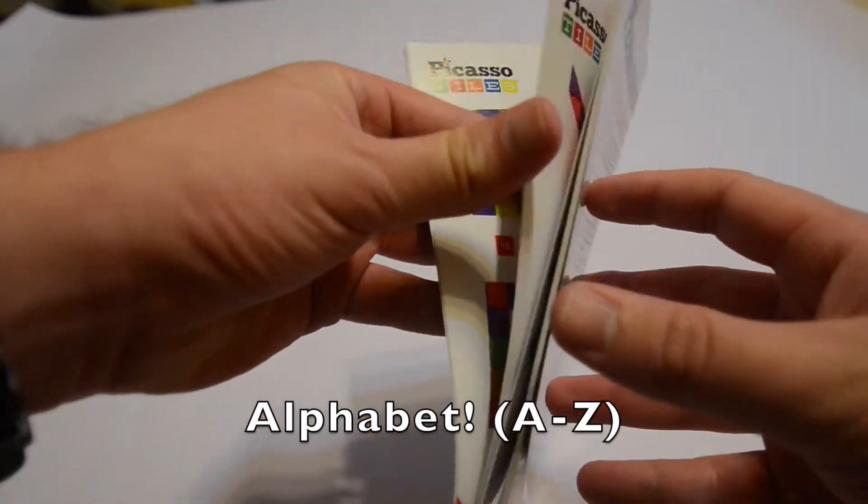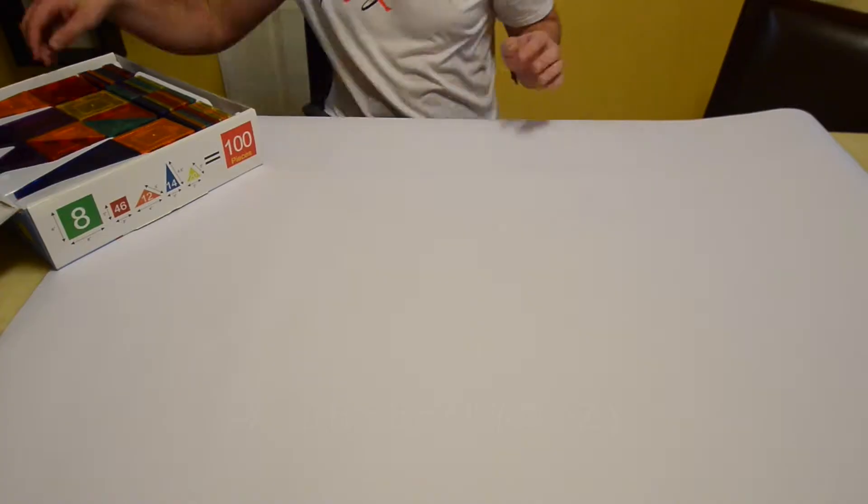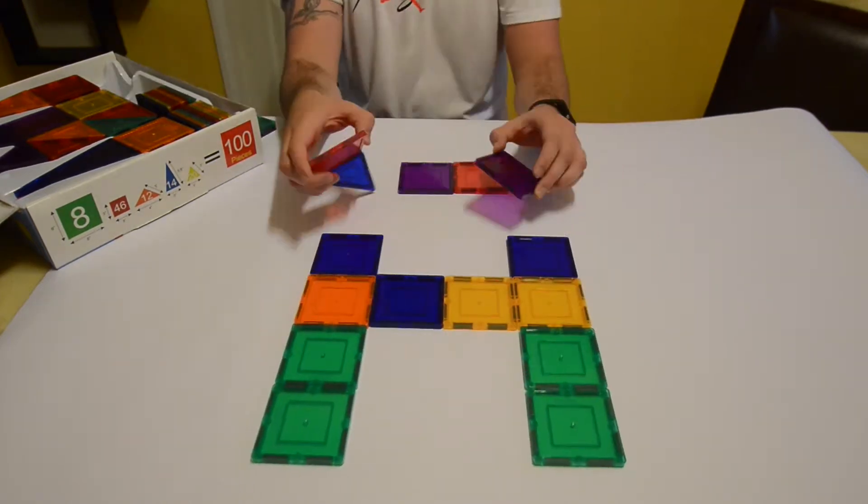Next up we have the alphabet. We can use the 60 piece or 100 piece set. We're gonna do all the way from A to Z.